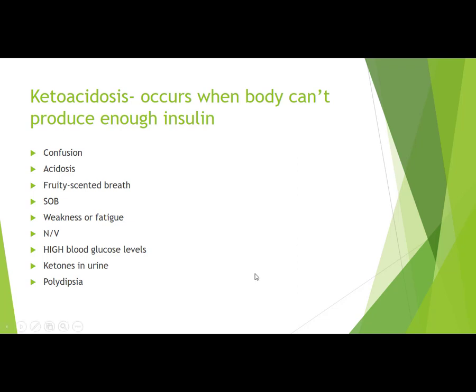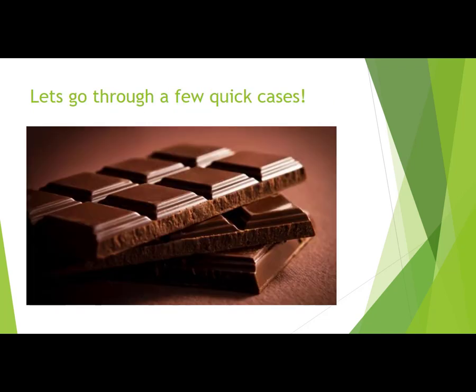Ketoacidosis occurs when the body can't produce enough insulin. Signs include confusion, acidosis (pH below the 7.35–7.45 range), fruity-scented breath, shortness of breath, weakness or fatigue, nausea and vomiting, very high blood glucose levels (400–500 mg/dL), ketones in the urine, and polydipsia. The fruity breath smell is quite distinctive — it actually smells like gummies.